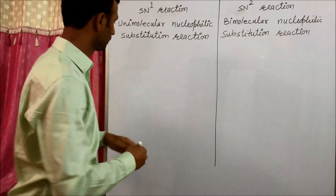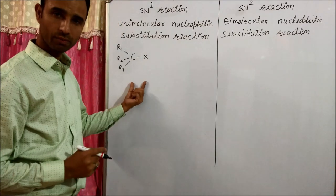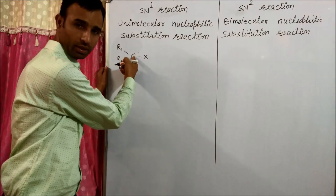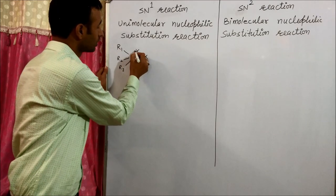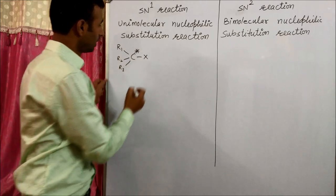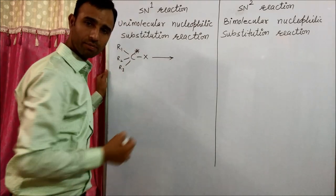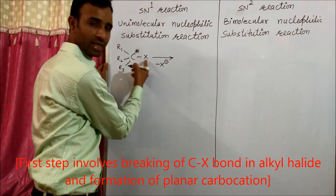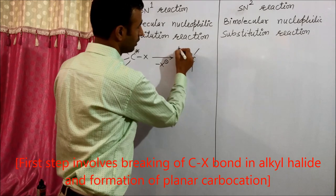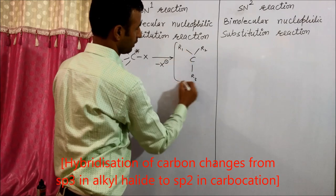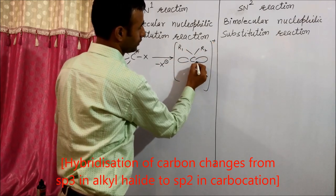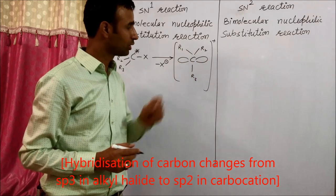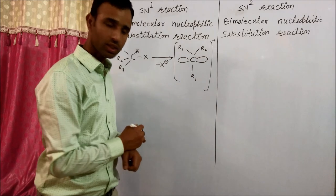In SN1, let us take an example. We have a molecule where X is the leaving group and R1, R2, R3 are different groups. This carbon is attached to four different groups or atoms, so this is a chiral carbon. In the first step, X is removed — there is a breaking of the C–X bond, which leads to the formation of a carbocation with three sigma bonds and one unhybridized p orbital.